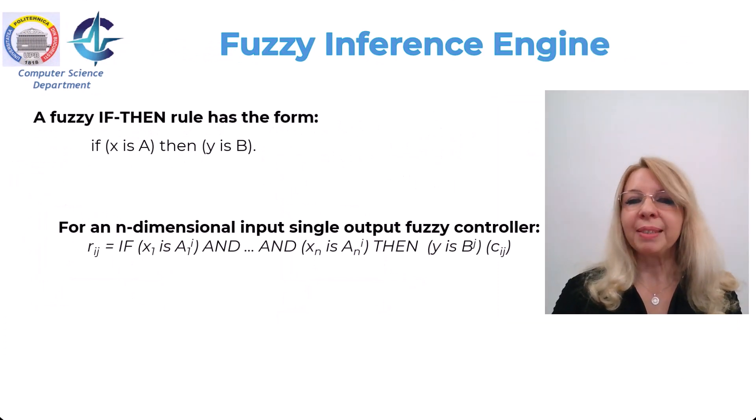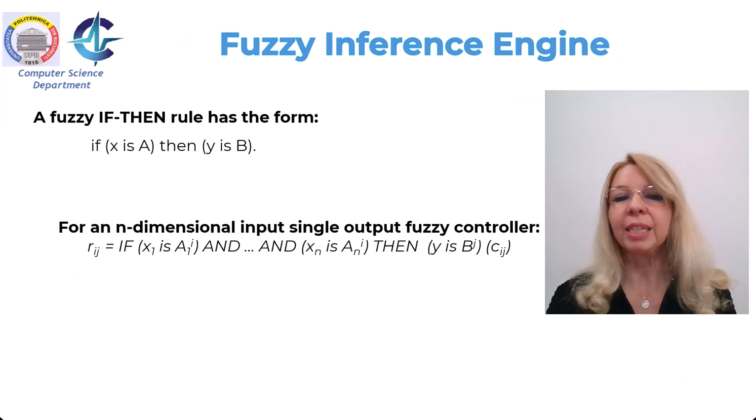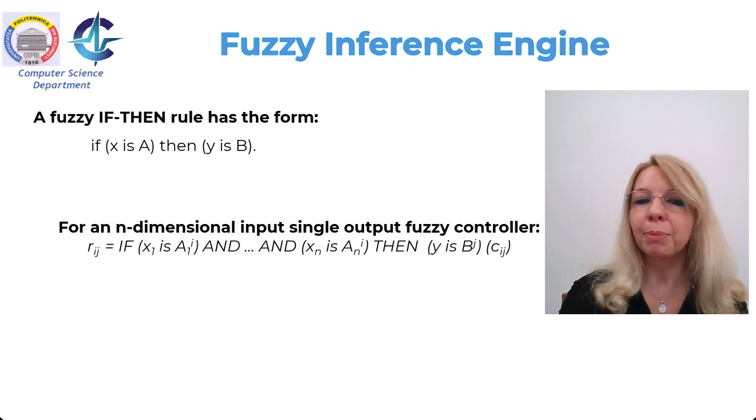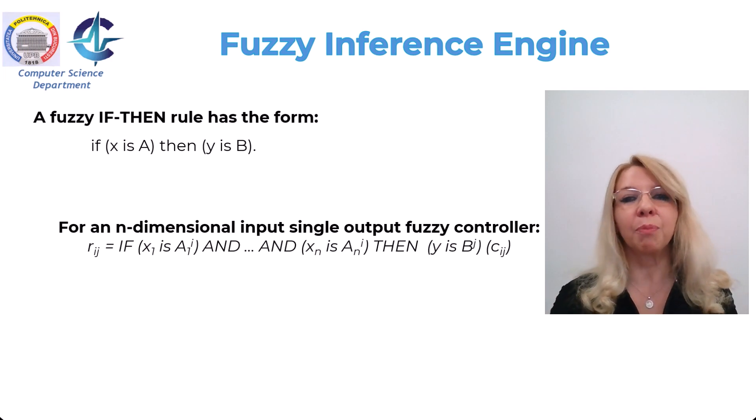So in the figure, you can observe the possible shapes for the membership function in all the cases: a triangular membership function, trapezoidal one, Gaussian one, generalized Bell membership function, or a sigmoidal membership one.